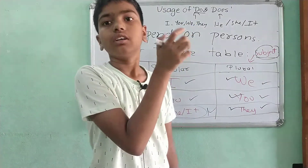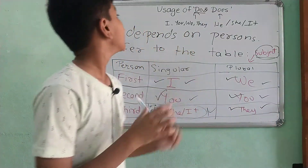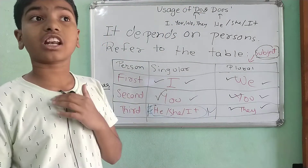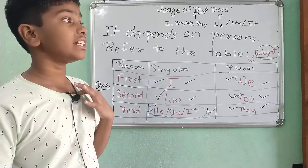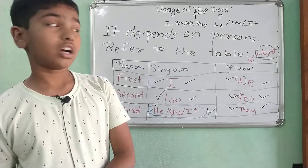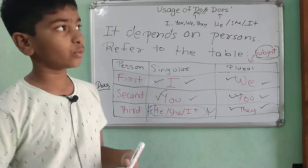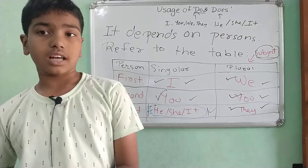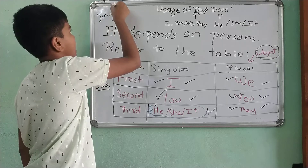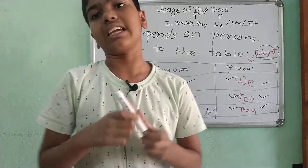For example: she does her homework, he does his homework. Or with 'do': I do dancing, we do dancing. We don't say 'they does dancing.' And the singular and plural impact is also followed in the same situation.